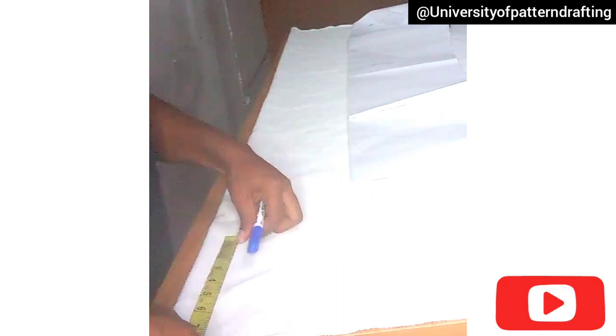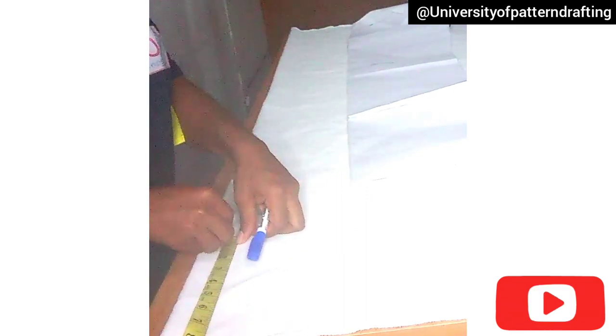The first thing I'm going to do is extend the length of my front skirt pattern by eight inches. For the tail you can use between eight and 22 inches, just depending on how long you want the tail of the dress to be.